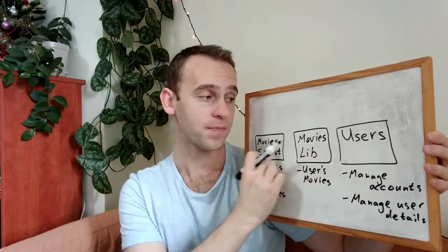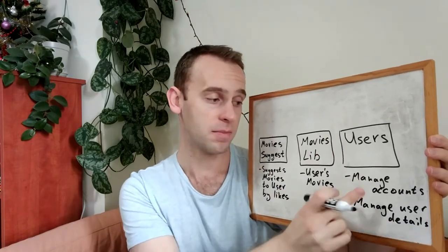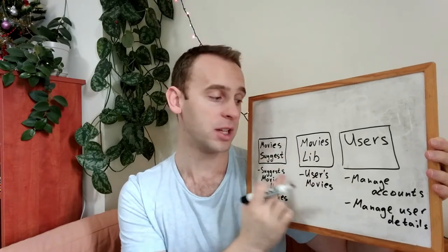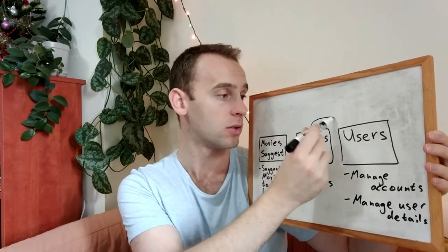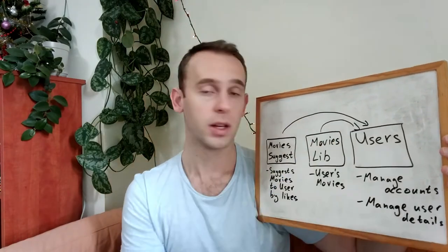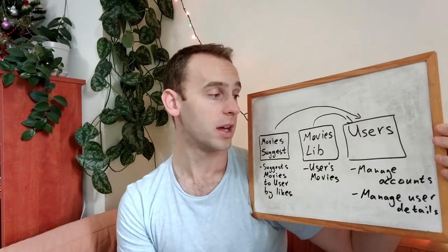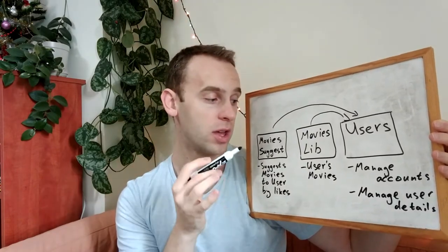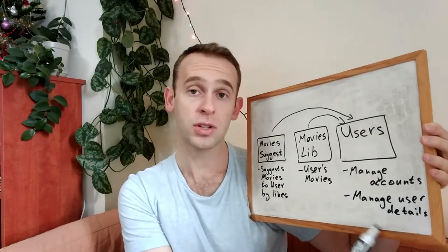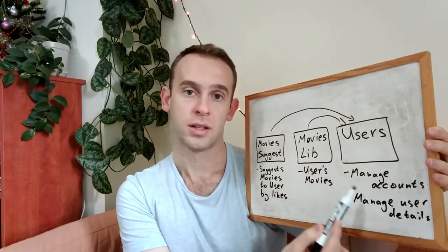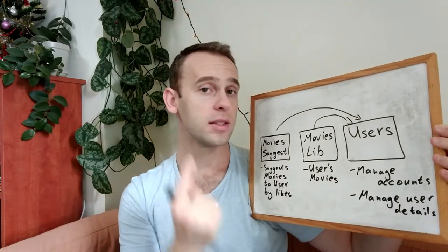So basically, you can think that they rely on the users module. They need to know the user details and every time an account changes, they should be updated. So one way to think about it is to create a dependency from this module to the users module and manage the library and suggestions by user details and listen to account changes. This is one way of doing it.